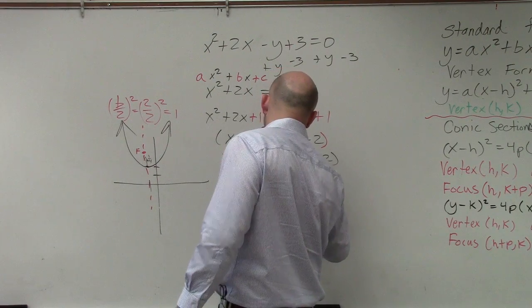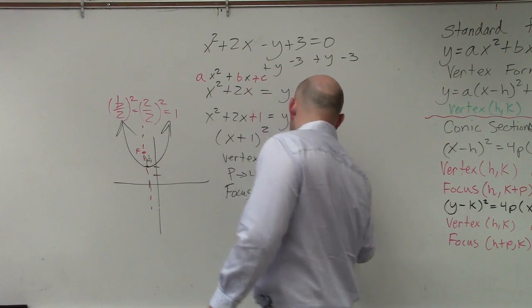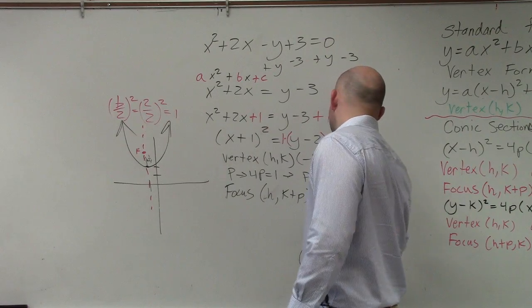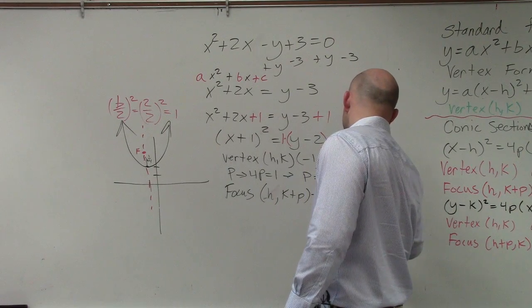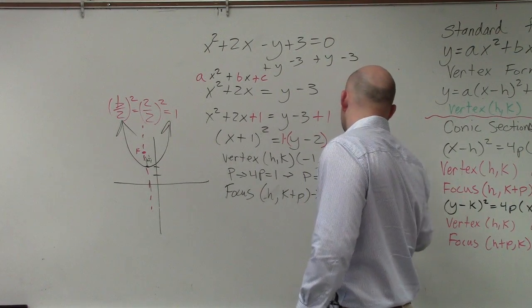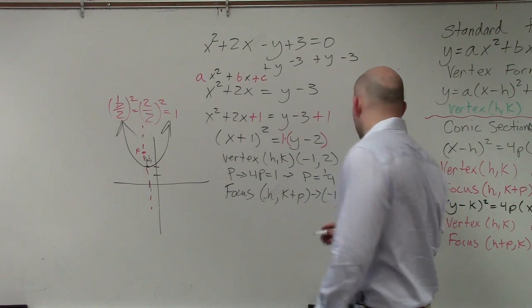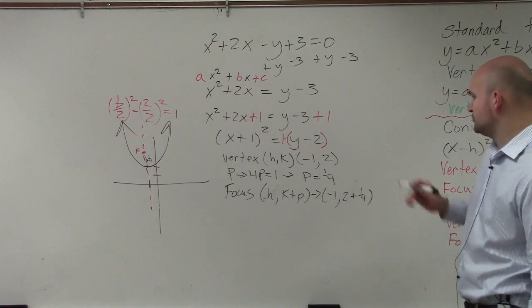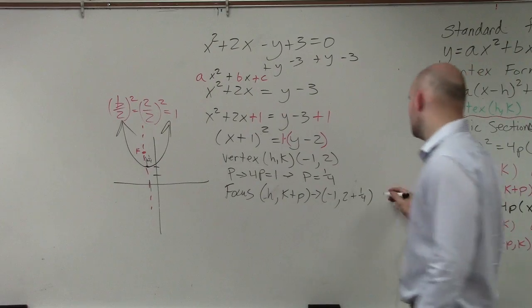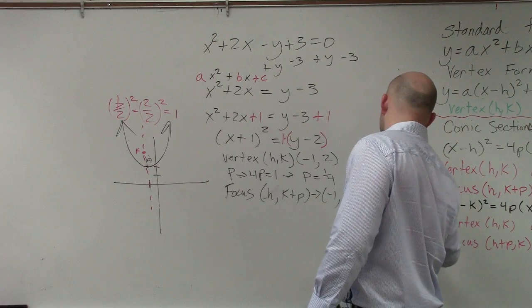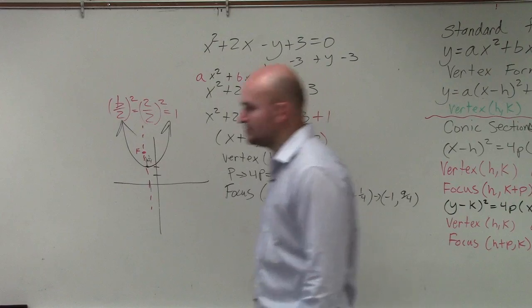h comma k plus p, which is negative 1 comma 2 plus 1 fourth, which would be 9 fourths. Or you could use a decimal.